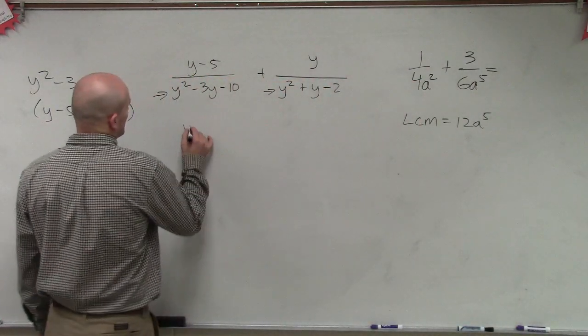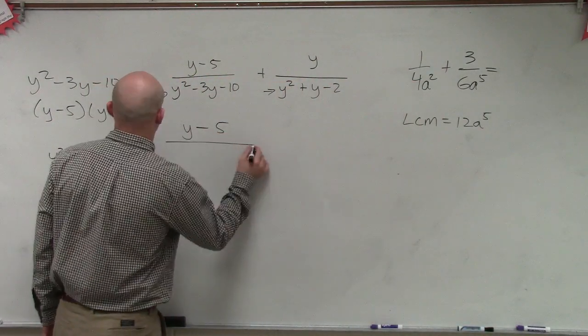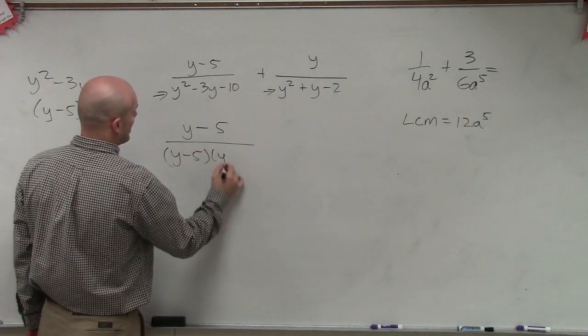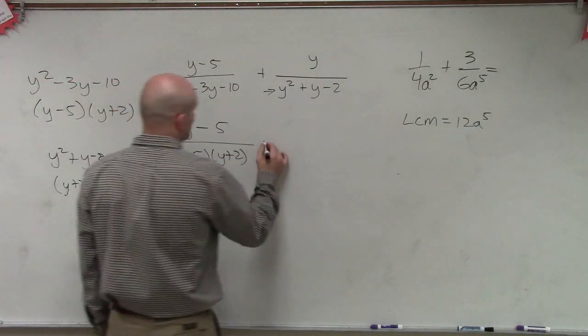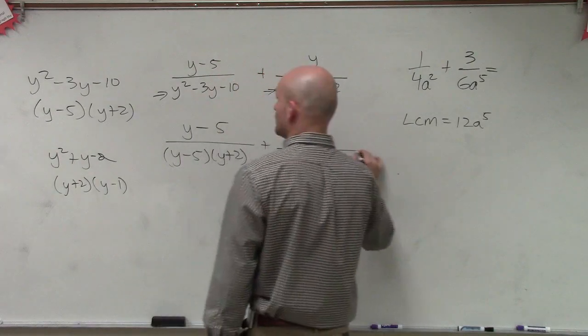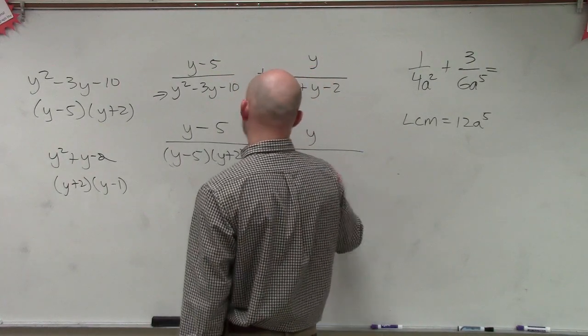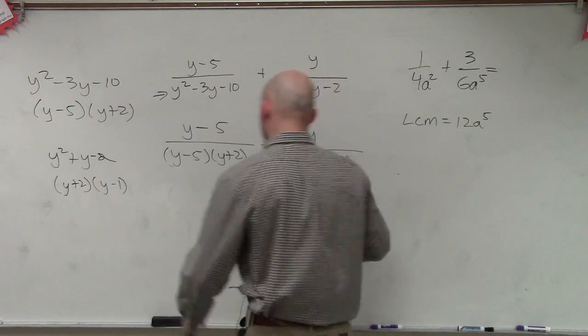So now what I'm going to do is I'm going to rewrite this as 5 over my new factored form, y minus 5 times y plus 2, plus y over y plus 2 times y minus 1.